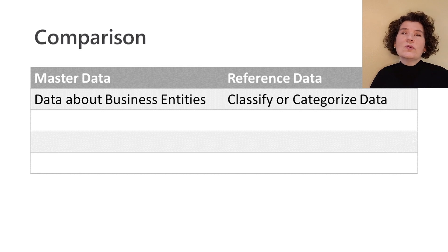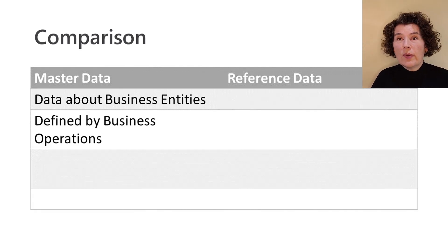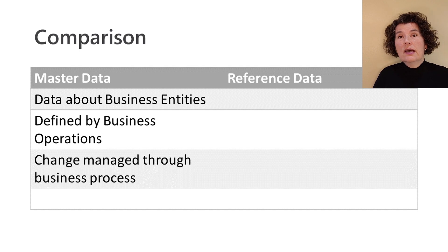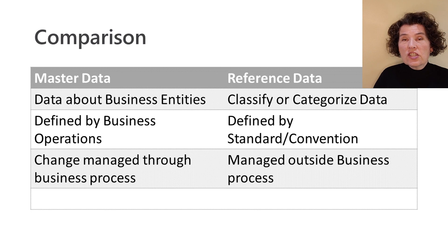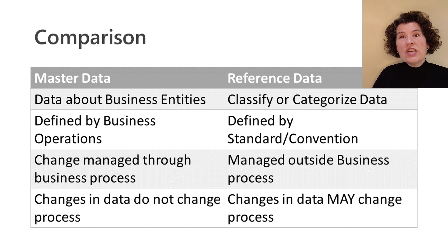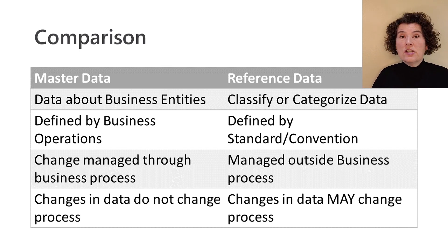Generally, master data is defined within the context of business operations. It's defined and managed by the business, and changes to master data are managed as a standard course of business process. Whereas reference data is defined by way of a national or international standard or common industry convention — it is managed outside the business, and changes in reference data may introduce changes in existing business process rules or data.